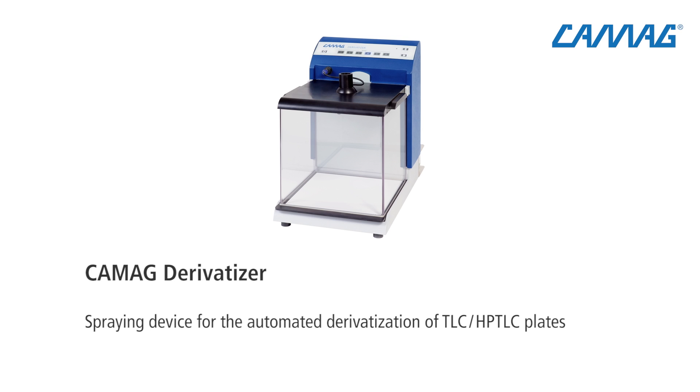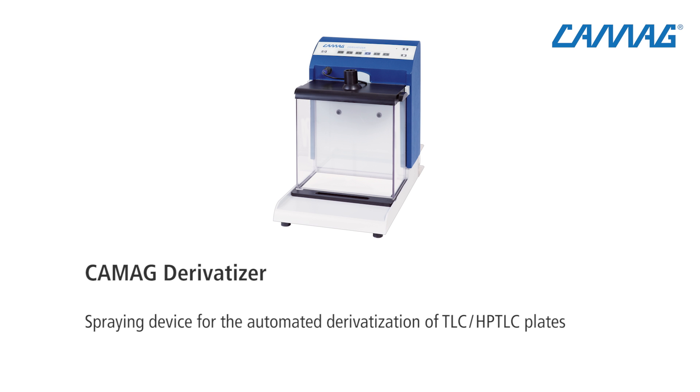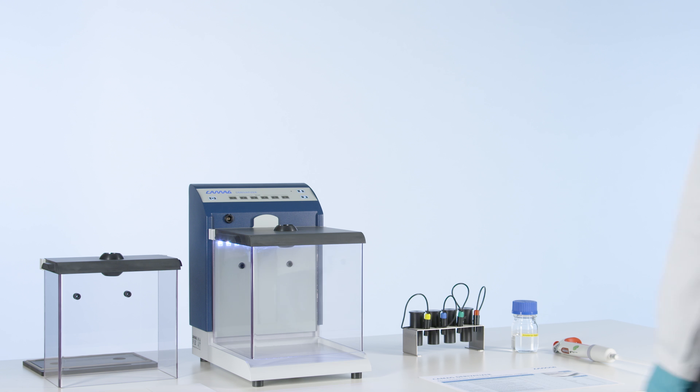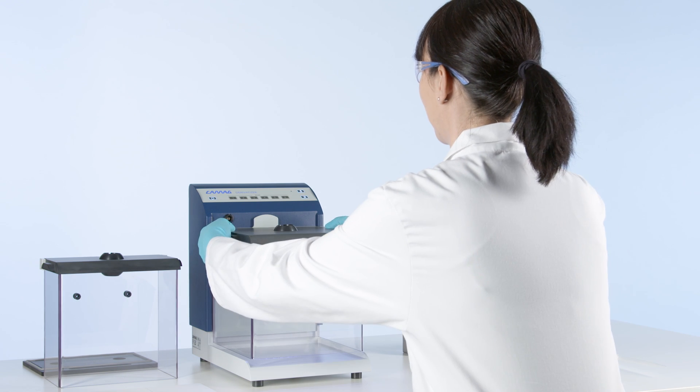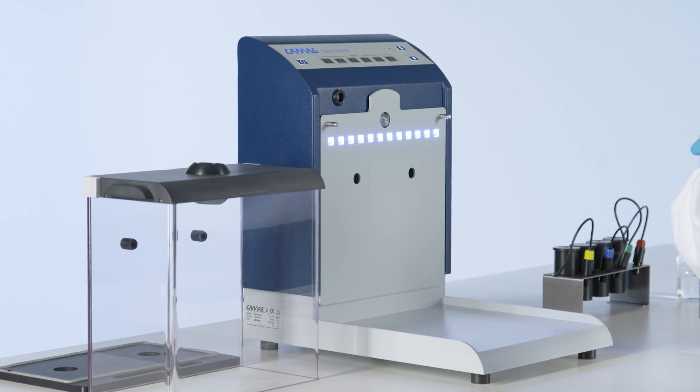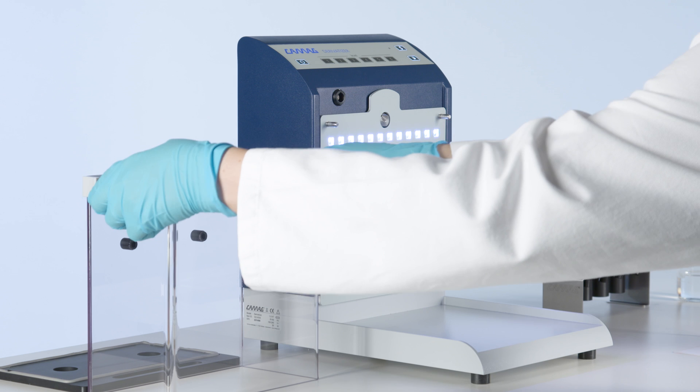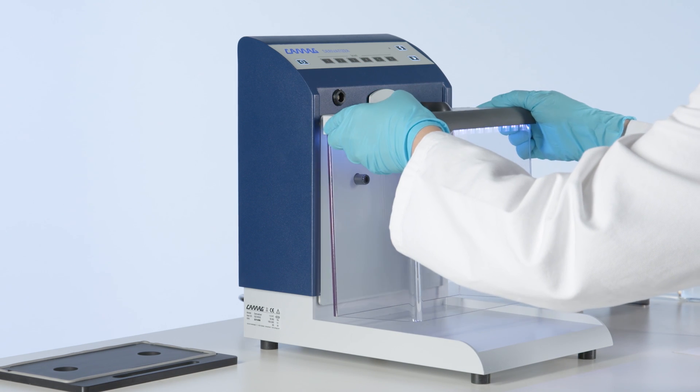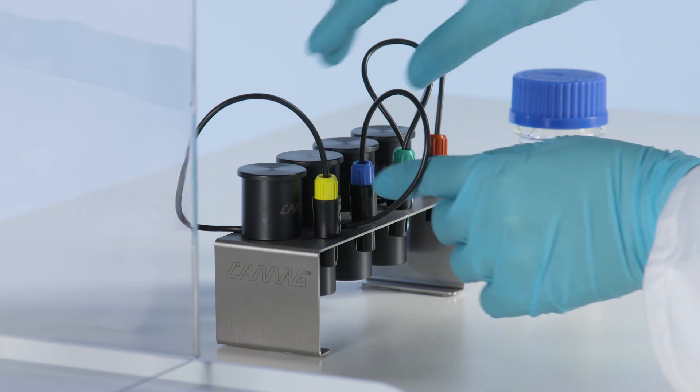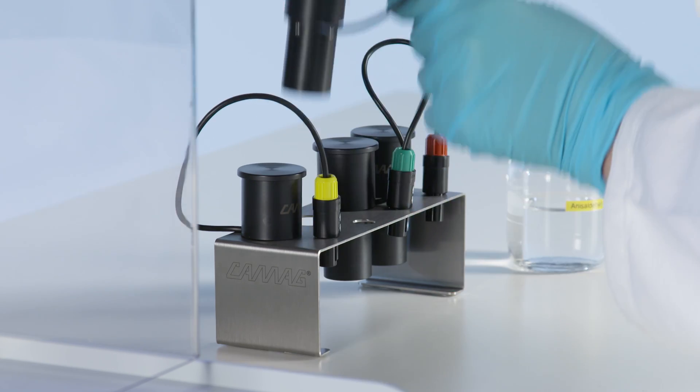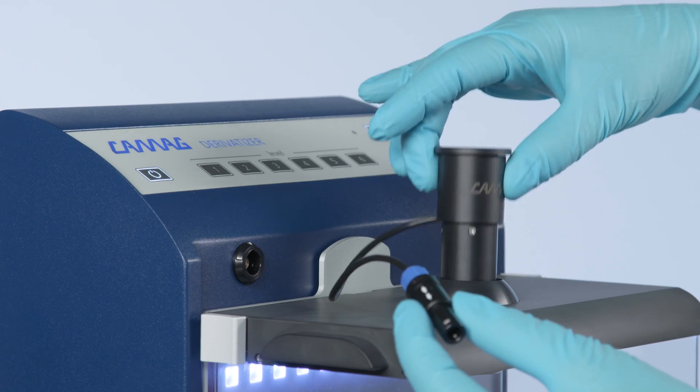The stand-alone unit is available for two different plate formats, 20x20 and 20x10 cm. Select the small hood for HPTLC plates and the appropriate nozzle. To meet the diverging physicochemical properties of the different reagents, four different color-coded spray nozzles are employed and the user can select from six spraying levels.